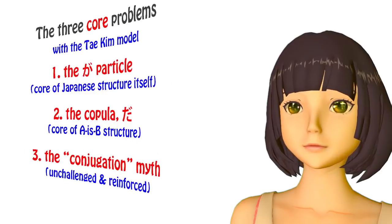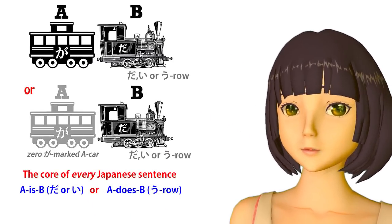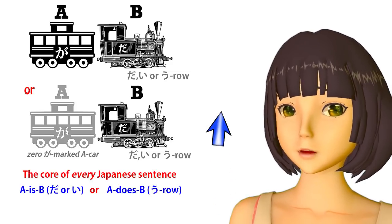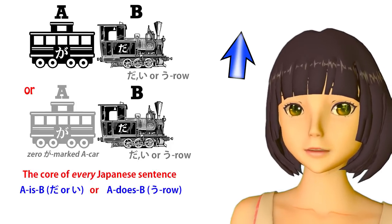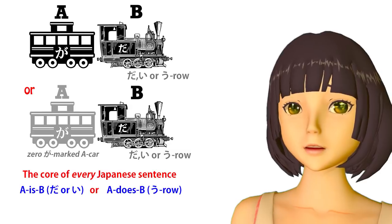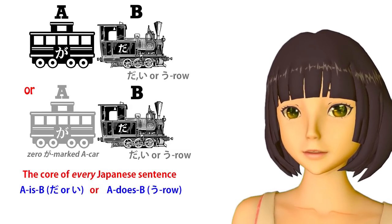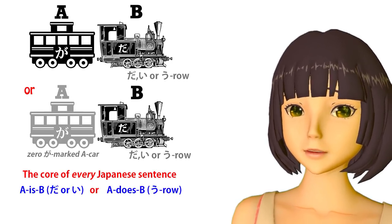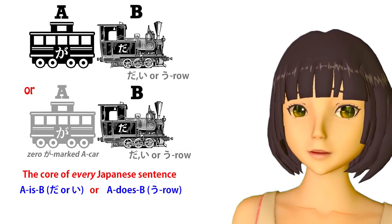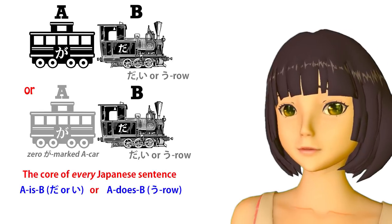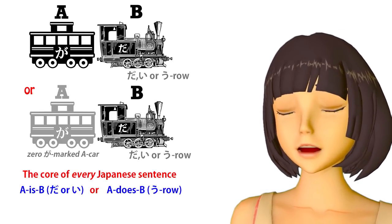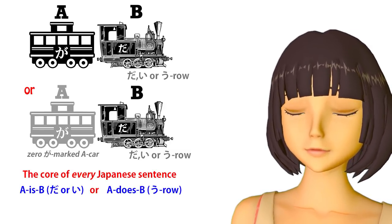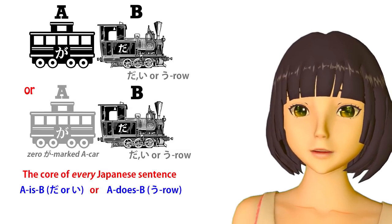The first is the ga-particle. Now, the ga-particle, as I've explained on various occasions before, is the absolute core of Japanese. You can't have a sentence without the ga-particle, even though you can't always see it. It's sometimes present only as a logical entity, but it's always there. And if we don't have it, we don't have a sentence. Simple as that. What the ga-particle does is it marks the subject of the sentence. That's to say, the thing that we're saying something about. We're either saying A is B or A does B. What the A carries is the subject of the sentence, the be-er or the doer of the sentence. The ga-particle marks this.